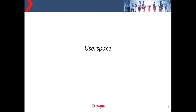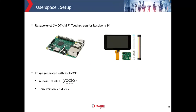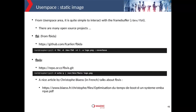Here is the rendering on the Raspberry Pi. In user space we are also able to play with a static image, though it's not very convenient. There are many projects available: FBI from fbdev lets you play with the framebuffer, fbv is an image framebuffer viewer, and you can also find a related article from Christophe about this topic.